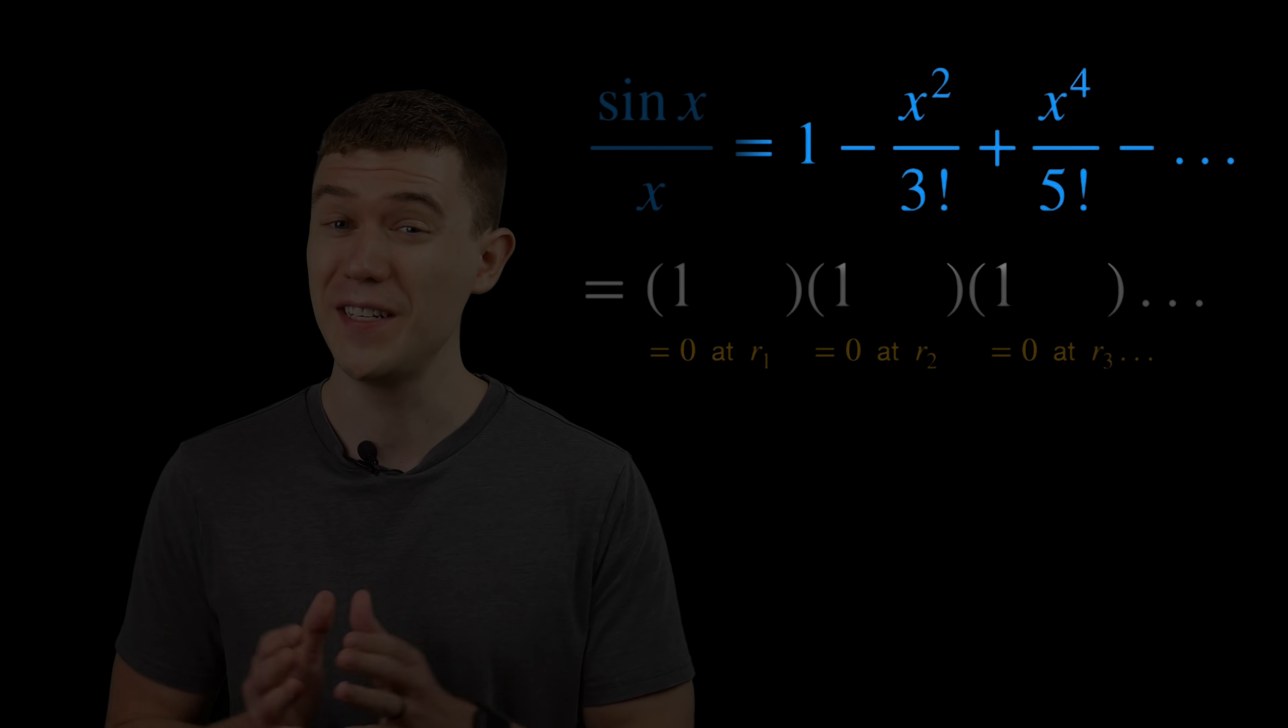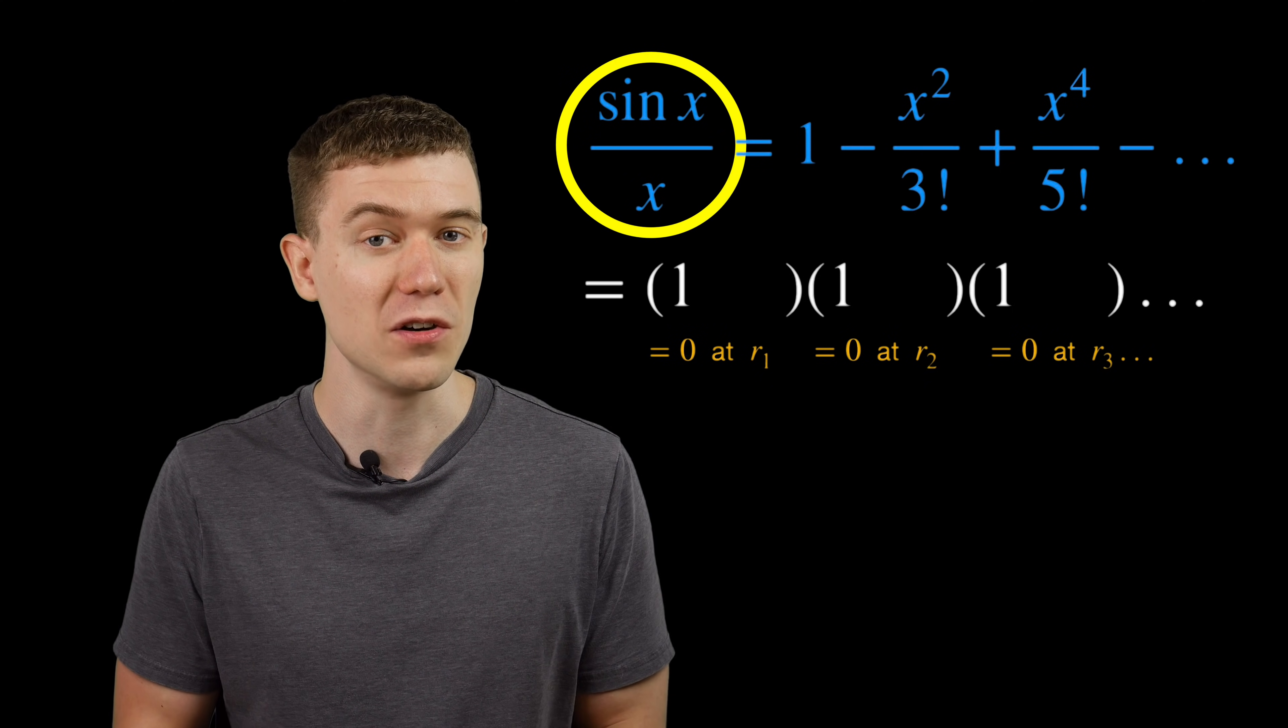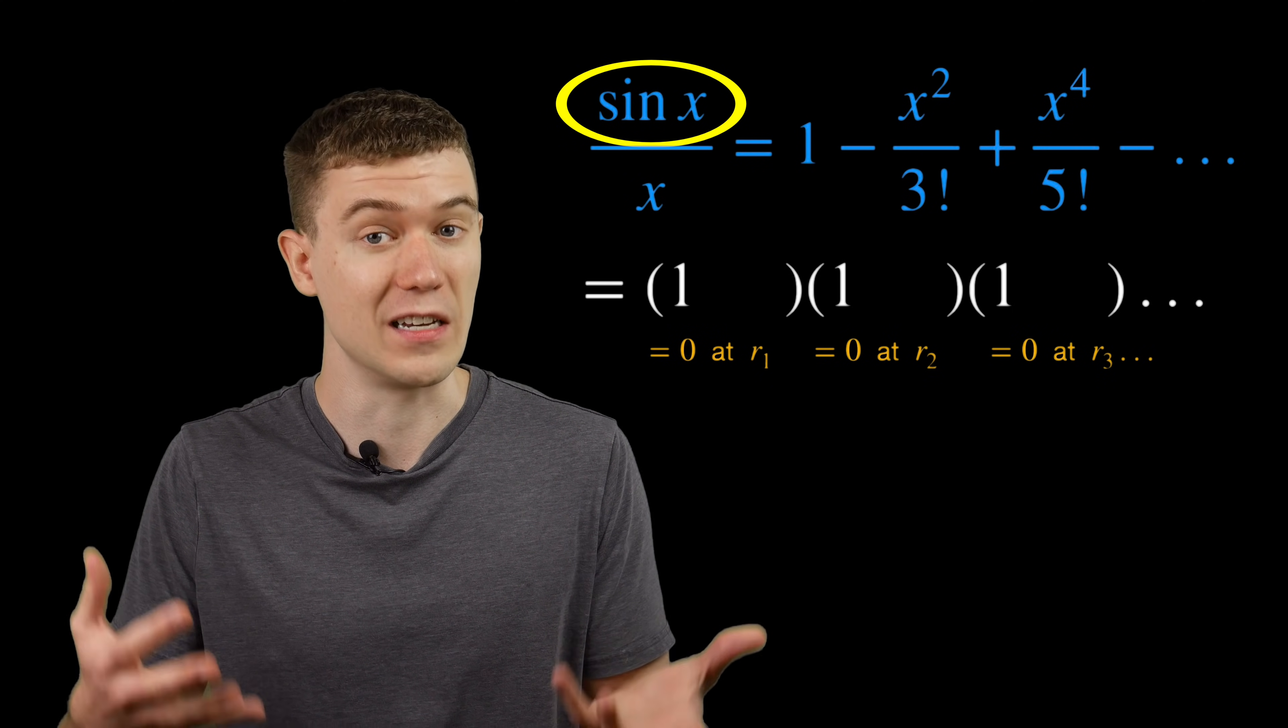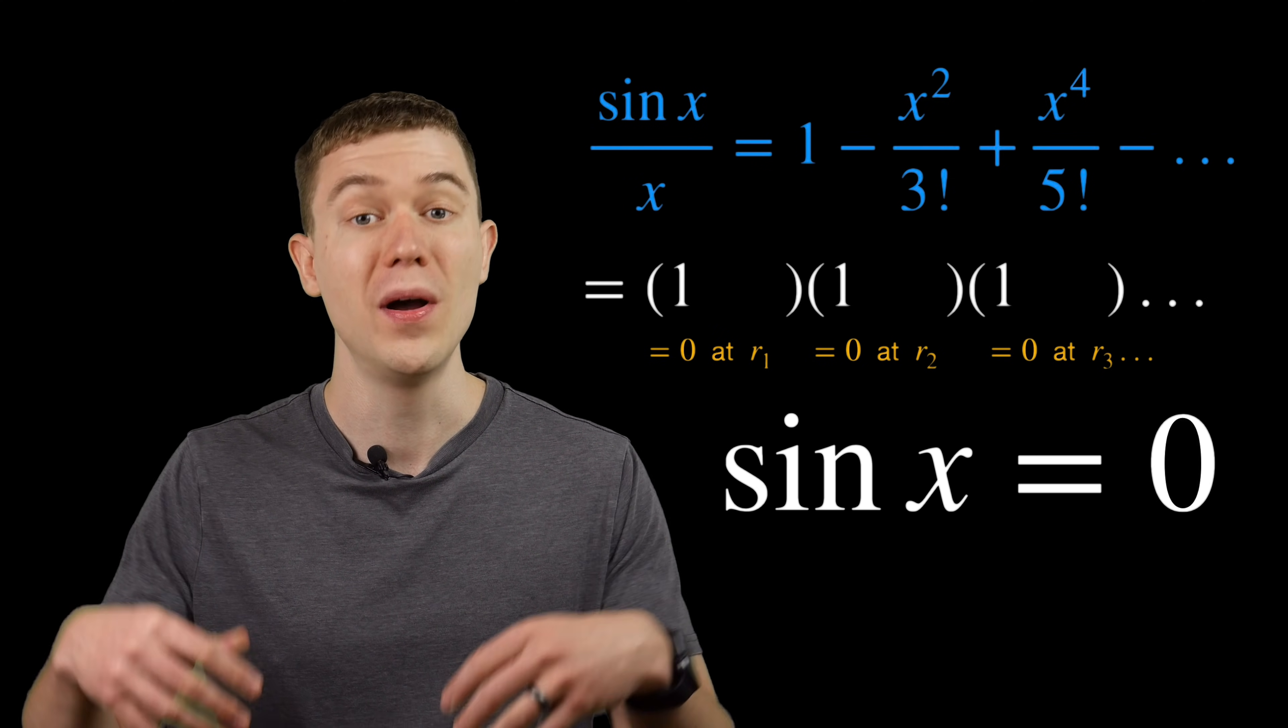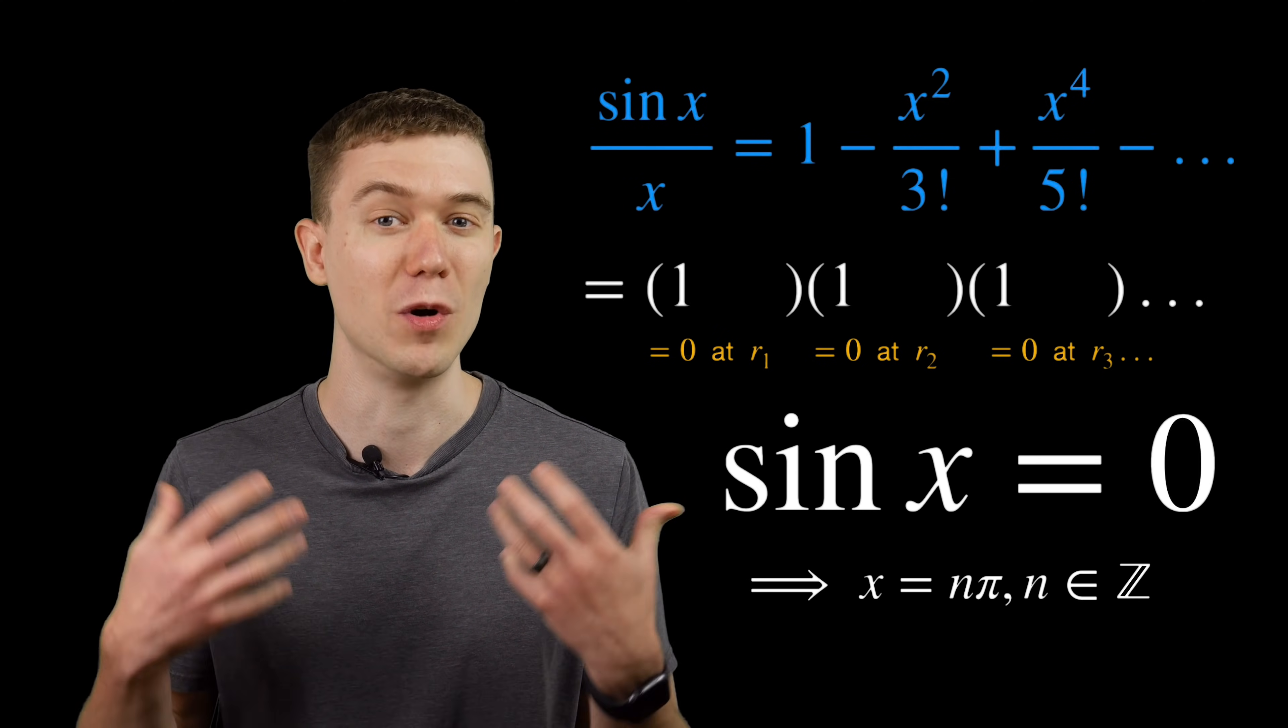Well, it's tough to see on the right-hand side, but if we look at sine x over x, that's 0 when the numerator is 0, and sine x is 0 at n times pi, where n is an integer.